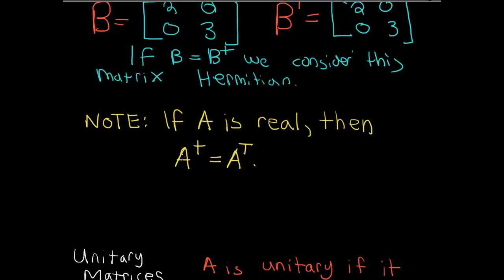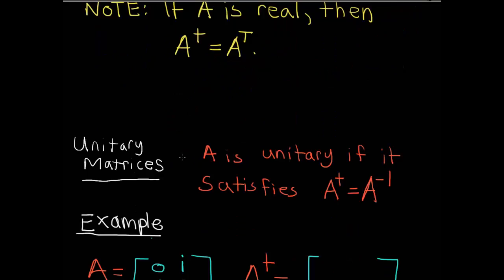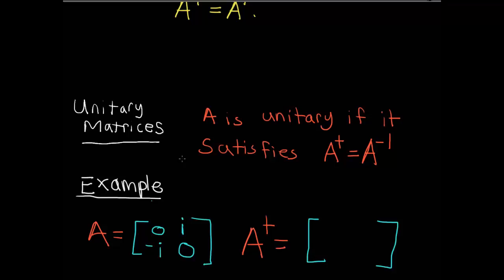Let's move on to unitary matrices. We call a matrix unitary if A Hermitian conjugate equals A inverse — a rather simple definition. In other words, the Hermitian conjugate is equal to the inverse. When dealing with real numbers, we recall that for a matrix to be orthogonal it had to satisfy A transpose equals A inverse. You can think of a unitary matrix as the complex number version of orthogonality.